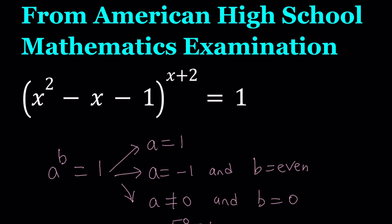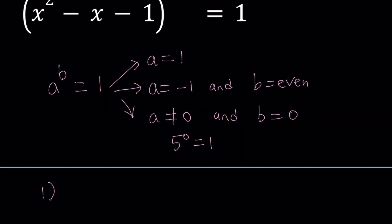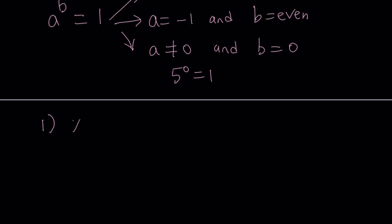I'm going to number the cases 1, 2, and 3. Obviously, there's another way to approach this problem, which I'm also going to show. First case, we have x squared minus x minus 1 being equal to 1. So x squared minus x minus 1, which is the base, set it equal to 1. What do you get from here?